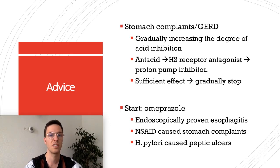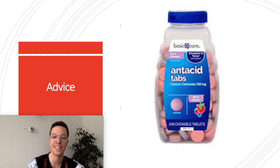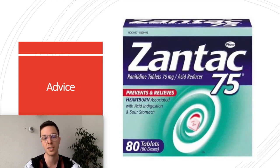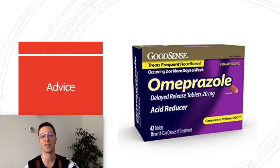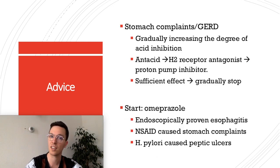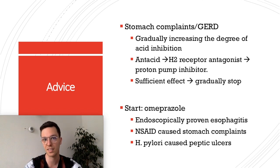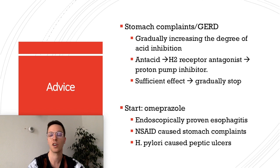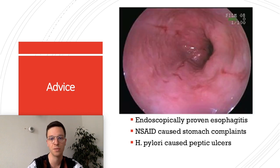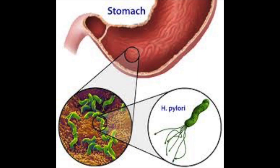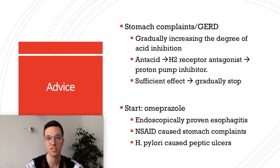When using Omeprazole for stomach complaints and GERD, it's always smart to gradually increase the degree of acid inhibition. You start with an antacid; if insufficient, you use an H2 receptor antagonist; and if still insufficient, you use a proton pump inhibitor like Omeprazole — so it's your third choice. This is because proton pump inhibitors can have a lot of side effects. Once you have sufficient effect, you start to lower the dose and gradually stop altogether. However, exceptions where you immediately start with Omeprazole include endoscopically proven esophagitis, patients taking NSAIDs with stomach complaints, and H. pylori causing peptic ulcers.